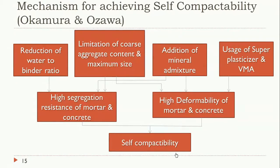To achieve high segregation resistance, we should reduce the water-to-binder ratio, limit the coarse aggregate content and its maximum size, and add mineral admixtures. To achieve high flowability or high deformability, we add mineral admixtures and chemical admixtures — specifically superplasticizers and VMA (viscosity modifying agents). Together, these produce good self-compacting concrete.